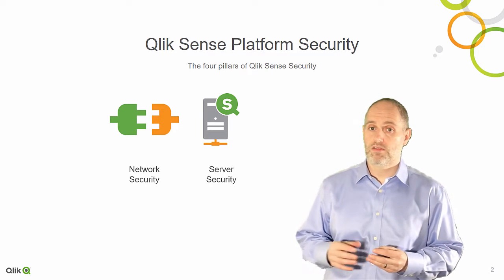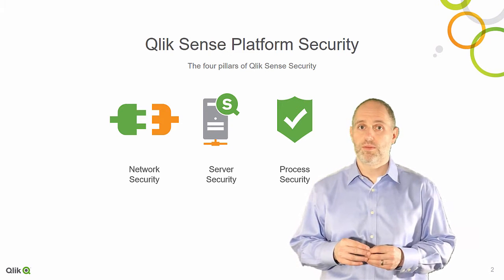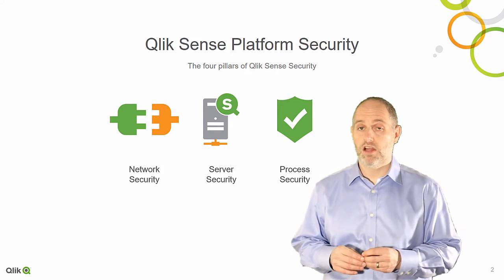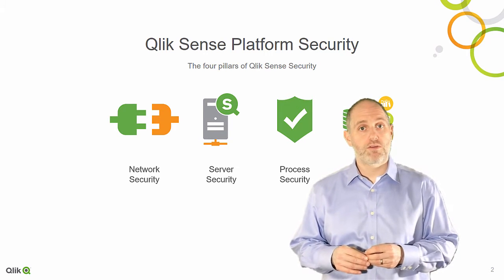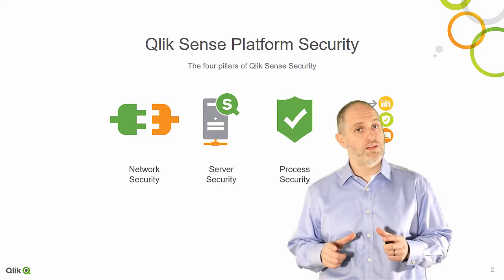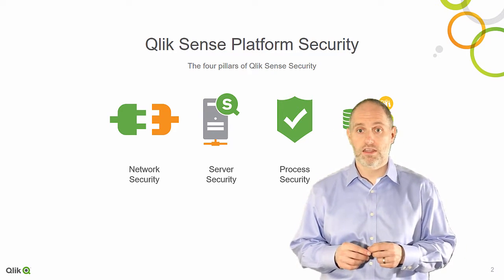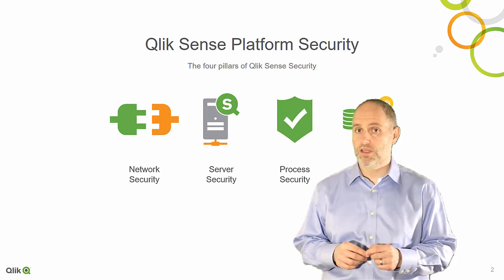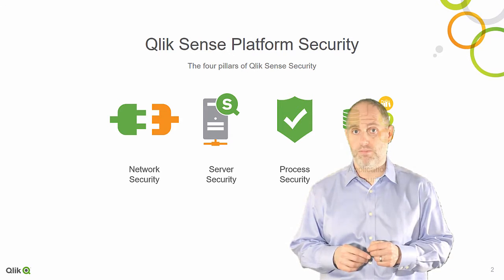Process security involves putting Qlik Sense through rigorous testing during development to mitigate security risks and handle unanticipated events. Application security — our focus area for this presentation — includes authentication, authorization, data access, and auditing to make sure users have the correct access to applications and self-service capabilities in the Qlik Sense platform.